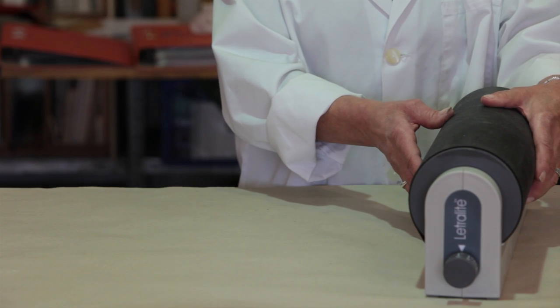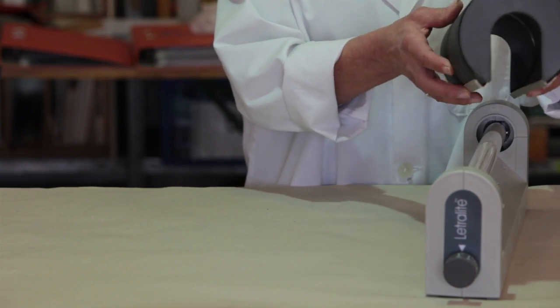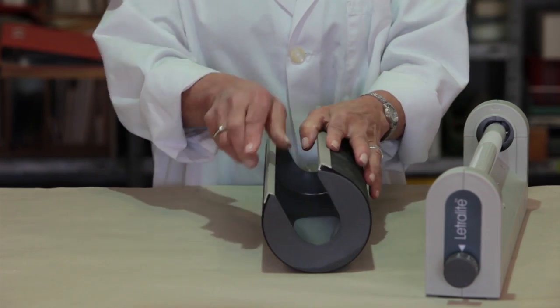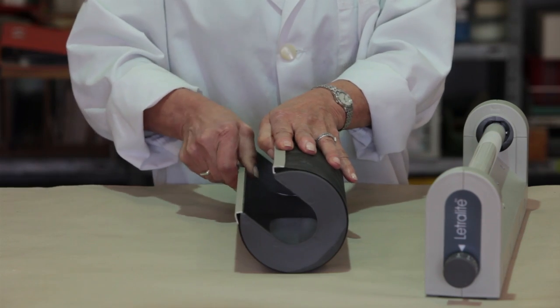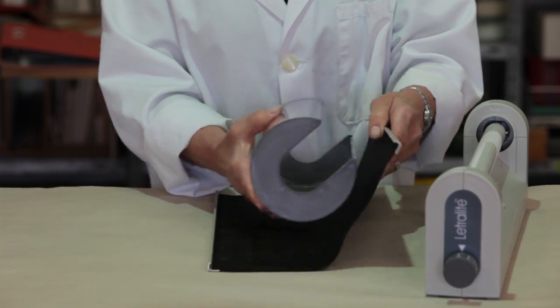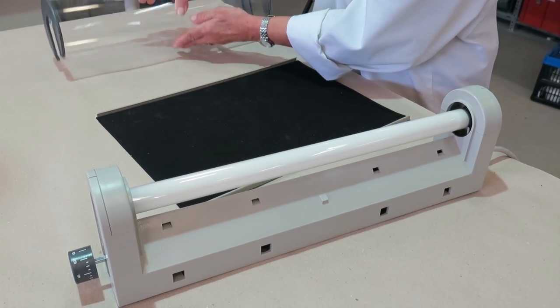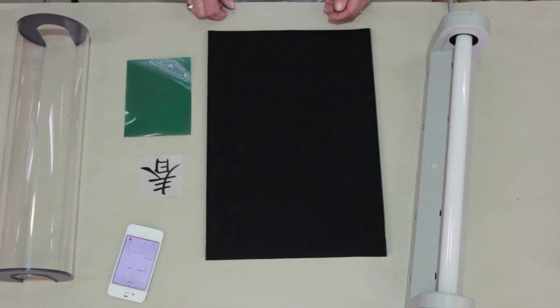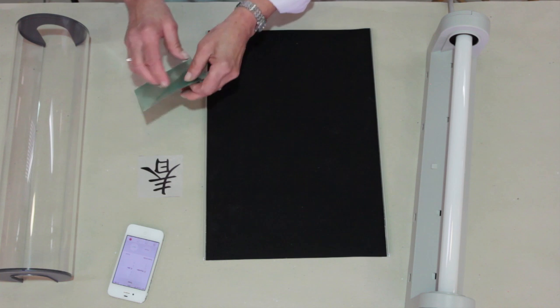When exposing the screen, always work in a darkened environment free of UV light. Have your UV lamp ready. Remove the sleeve and place it so that the inside of it is facing up.